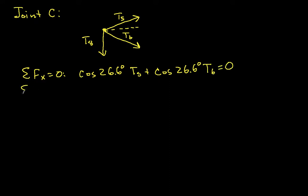Summing everything in the y direction, we have, let's see, sine 26.6 T5 minus sine 26.6 T6 minus T8 is equal to 0.